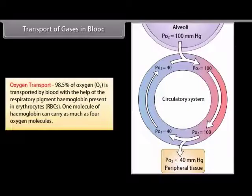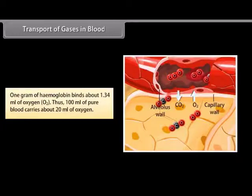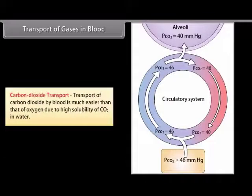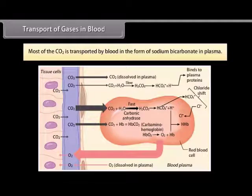For oxygen transport, 98.5% of oxygen is transported by blood with the help of the respiratory pigment hemoglobin, present in erythrocytes (RBCs). One molecule of hemoglobin can carry up to four oxygen molecules; one gram of hemoglobin binds about 1.34 ml of oxygen, so 100 ml of blood carries about 20 ml of oxygen. For carbon dioxide transport: about 7% of CO2 is dissolved in plasma, 23% is transported as carbaminohemoglobin, and 70% as bicarbonates — mostly as sodium bicarbonate in plasma.